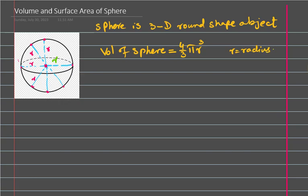That's the volume of sphere — how much space is occupied by the sphere. The surface area: if you open this 3D shape and convert it into a 2D shape, it will become a flat shape. For example, if you have a football and unstitch all pieces and place them on a table, the area covered by those pieces is called the surface area of the sphere.